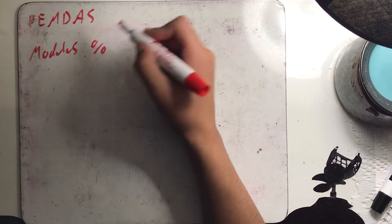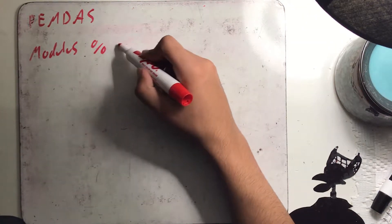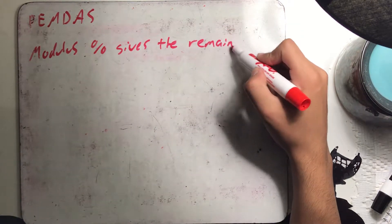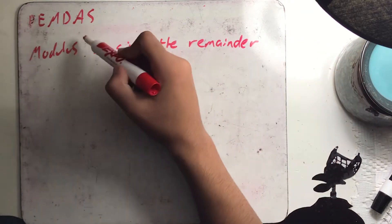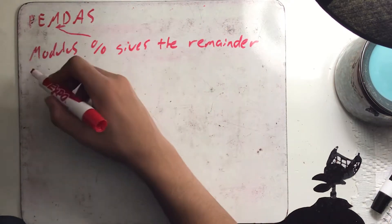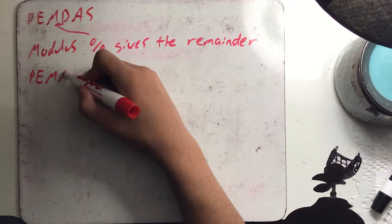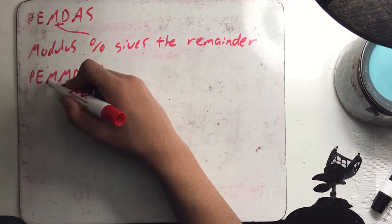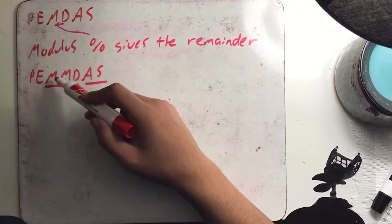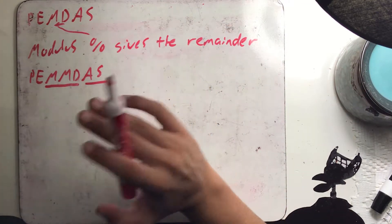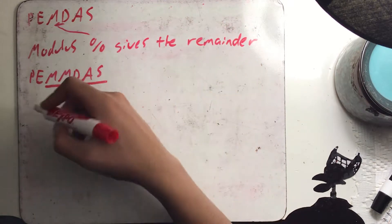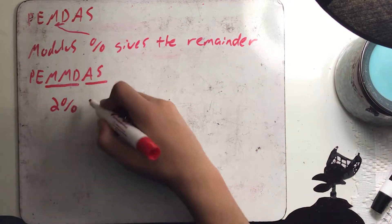There's one more operator in Java and it is the modulus operator, which is represented by a percent sign. This gives us the remainder. The modulus has the same precedence as multiplication and division, so going from left to right, multiplication, modulus, and division have the same precedence — whichever one you see first is what you do first.